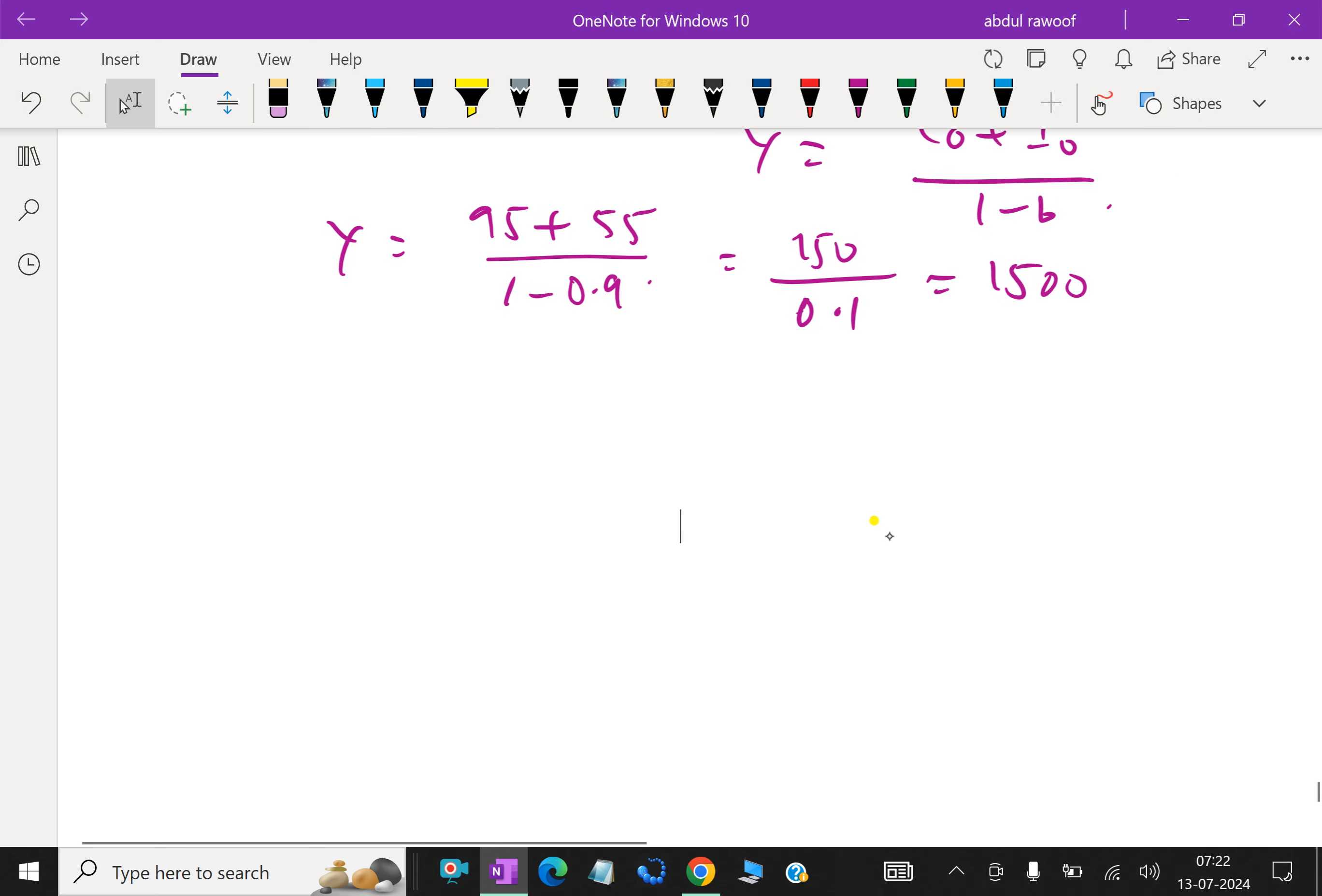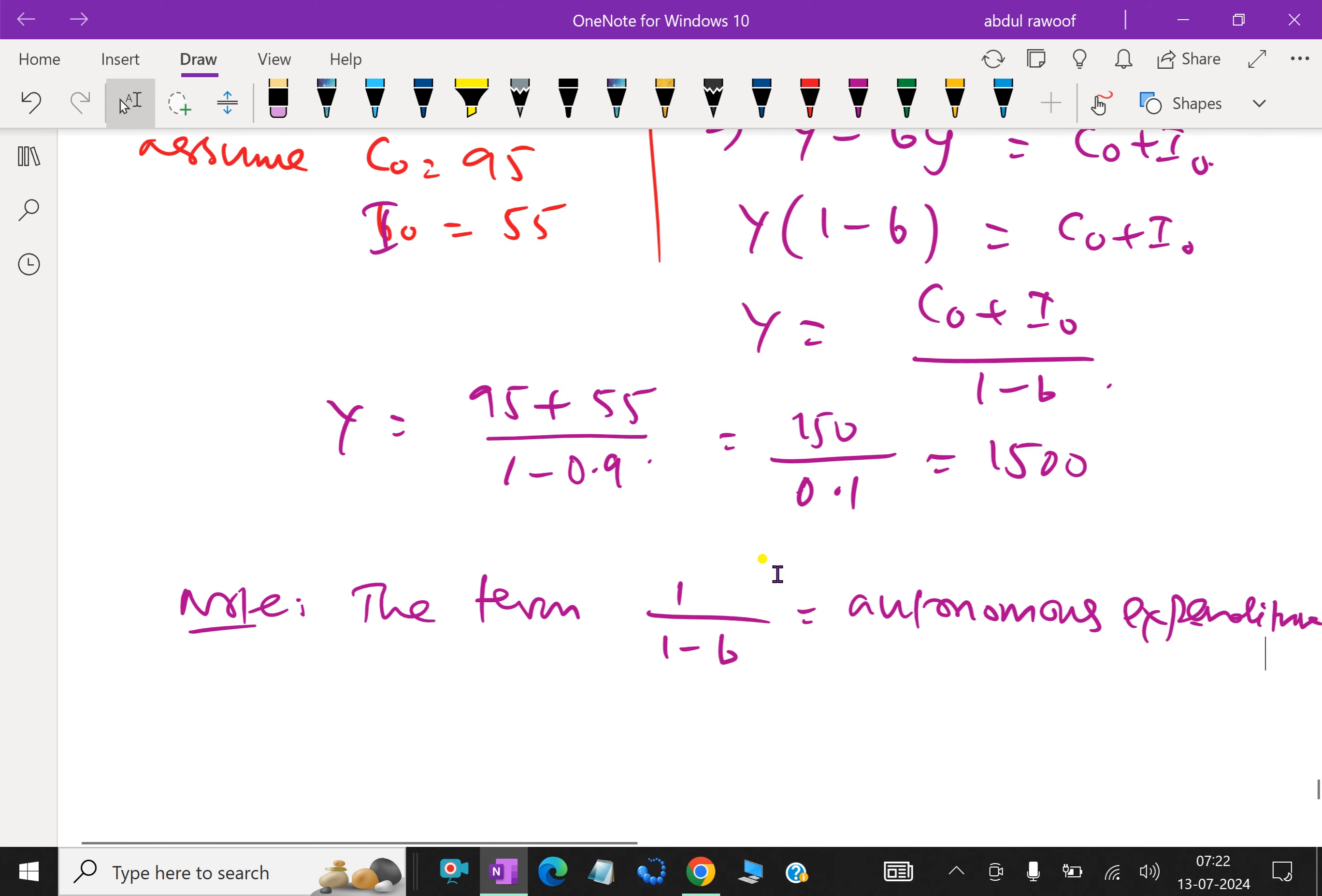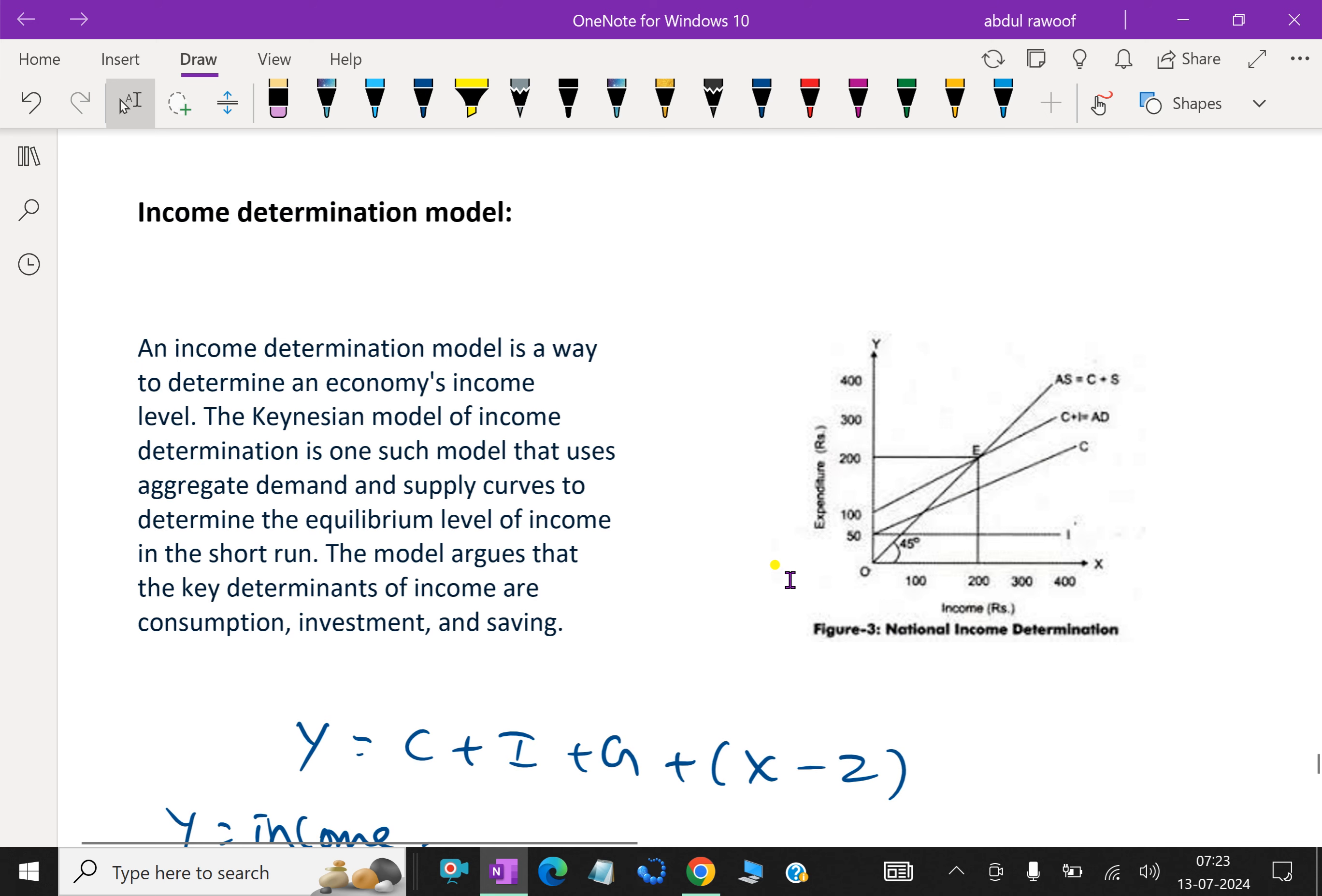Note, the term 1 over 1 minus b is called autonomous expenditure multiplier. So far we discussed about isocost line and its various factors and solved the problems also. Please subscribe our YouTube channel.